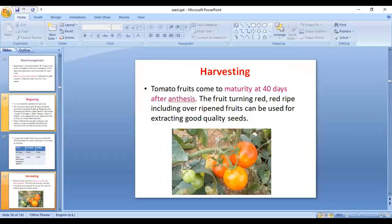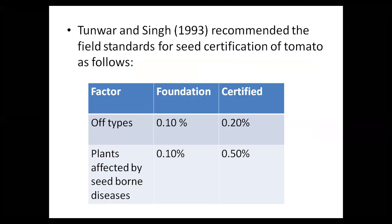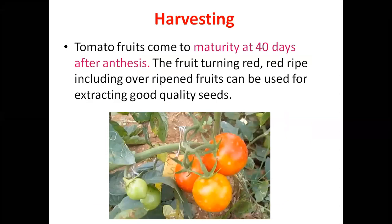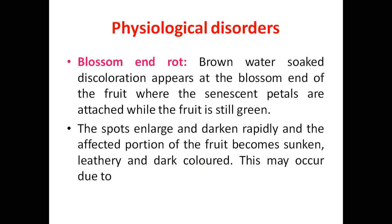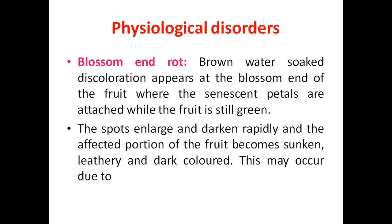Tomato seed harvesting is generally done 40 days after anthesis, depending on varietal characteristics. To obtain one kg of dried seeds, you need about 150 to 220 kg of fruits. From one hectare area, 100 to 150 kg of seeds can be obtained. Important pests and diseases include tomato fruit borer, whitefly, and blossom end rot, which is caused by calcium deficiency — also called BER.